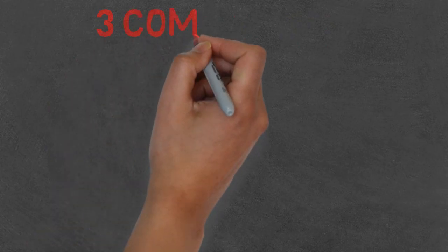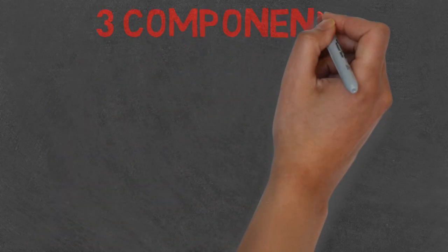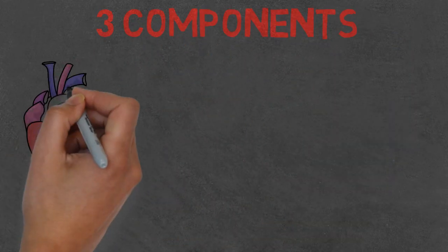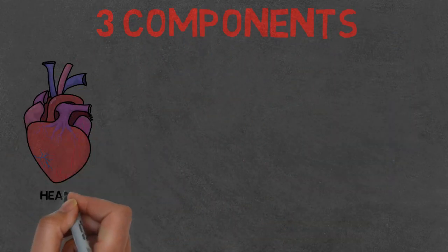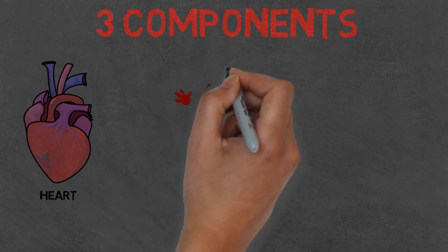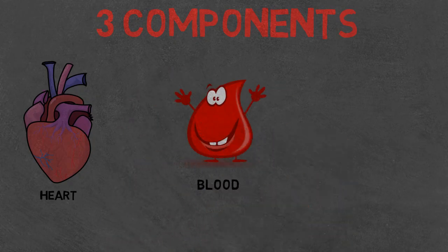Let's look at what makes up the circulatory system: the heart, the blood, and the blood vessels.